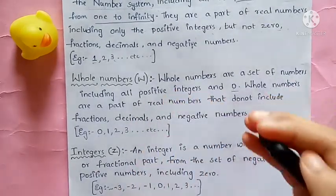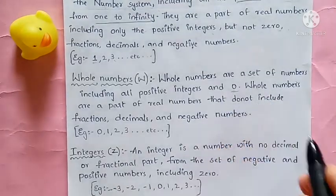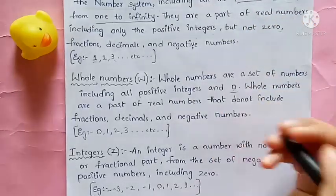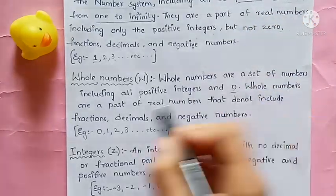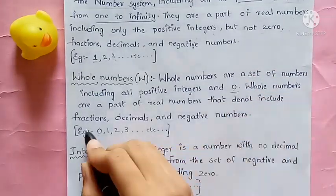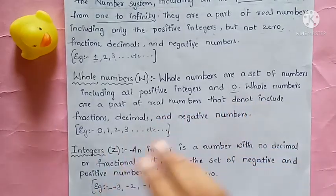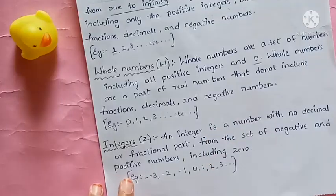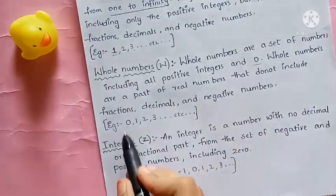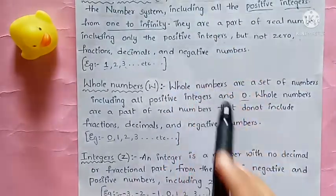Whole numbers are part of real numbers. They do not include fractions, decimals, and negative numbers. The smallest natural number is 1, while the smallest whole number is 0. This is the main difference between natural numbers and whole numbers.